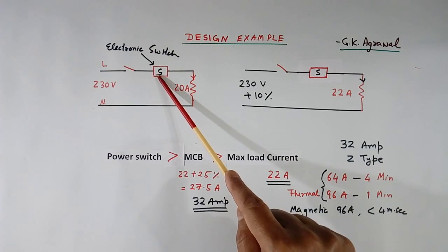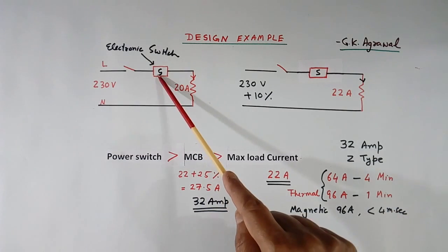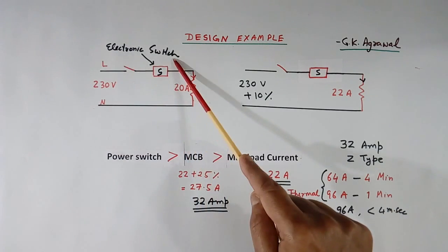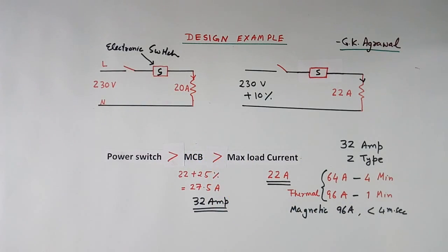And short time rating should be like this. Every electronic switch has enough short time rating. You can see the specifications. Generally to protect electronic switches, in addition to MCB, some electronic protections also are provided.